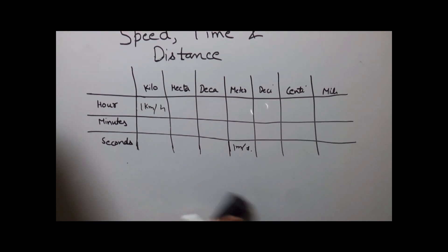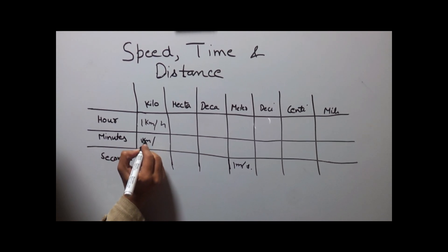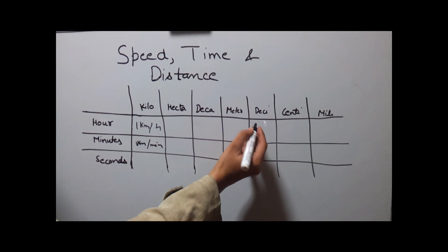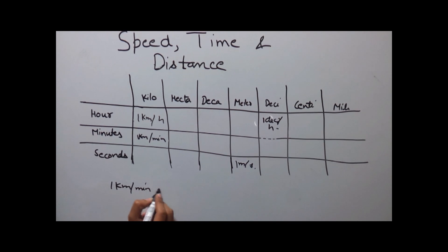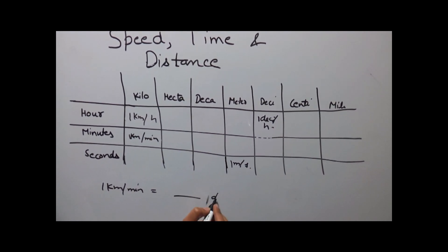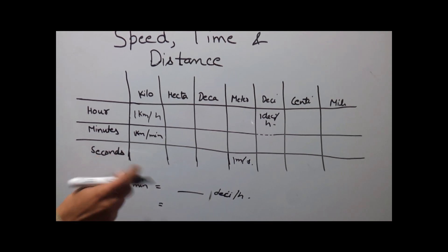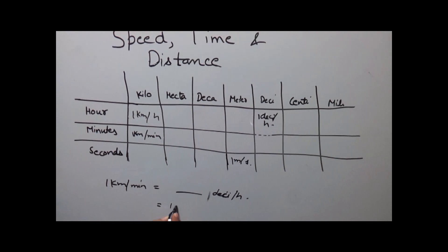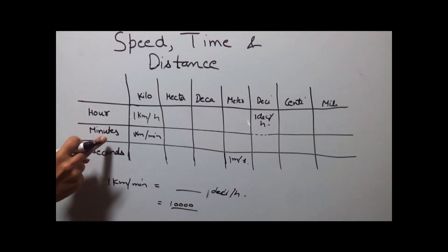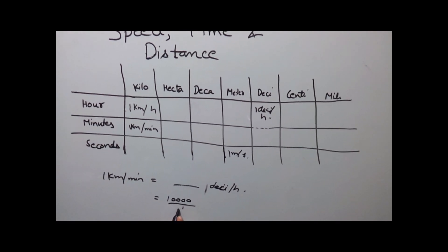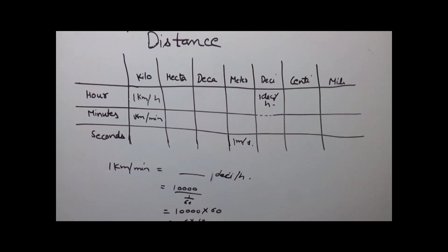Now let's take another example. Say we need to convert 1 kilometer per minute to decimeters per hour. First find out how many decimeters are in 1 kilometer: that is 10 to the power 4 decimeters. Then find how many hours are in 1 minute: 1 minute divided by 60 gives 1/60 of an hour. So the result is 10 to the power 4 multiplied by 60, which equals 6 into 10 to the power 5 decimeters per hour.